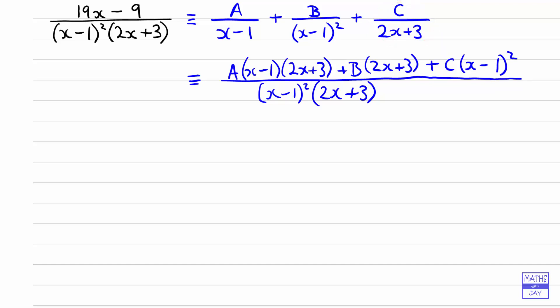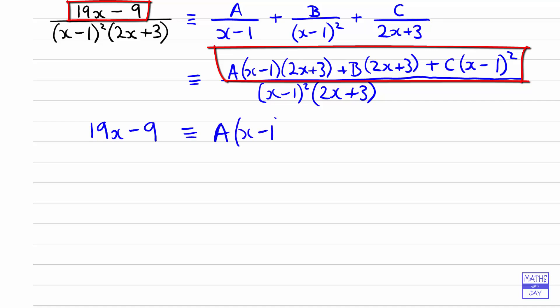And now, looking at our two fractions, the original one and the one I've just written down, the denominators are the same, so we know that the numerators are going to be the same. So what we've now got is that 19x minus 9 is identically equal to all this that we've just written at the top of this big fraction.